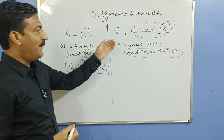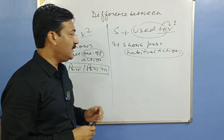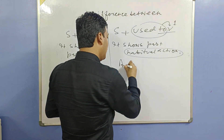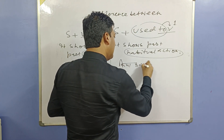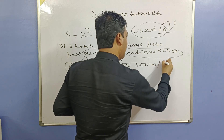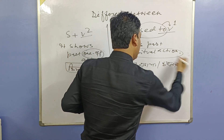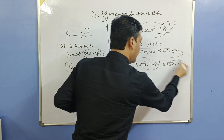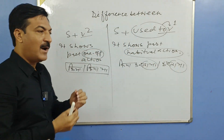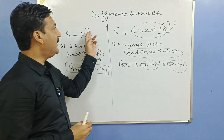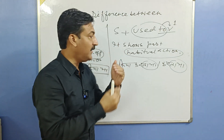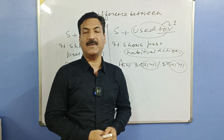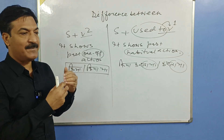Toh aap kaise samjhenge Hindi mein? Jaise V2 ke liye 'kiya' ya 'kiya tha' hai, 'used to' ke liye hogi: 'karta tha' ya 'kya karta tha'. Dekho is example mein — 'ta tha' hai. Agar kahein 'woh aaya tha' — is mein 'ta tha' nahi hai, so it's: he came. Lekin 'woh aata tha' — he used to come. Ya 'woh aaya karta tha' — he used to come.